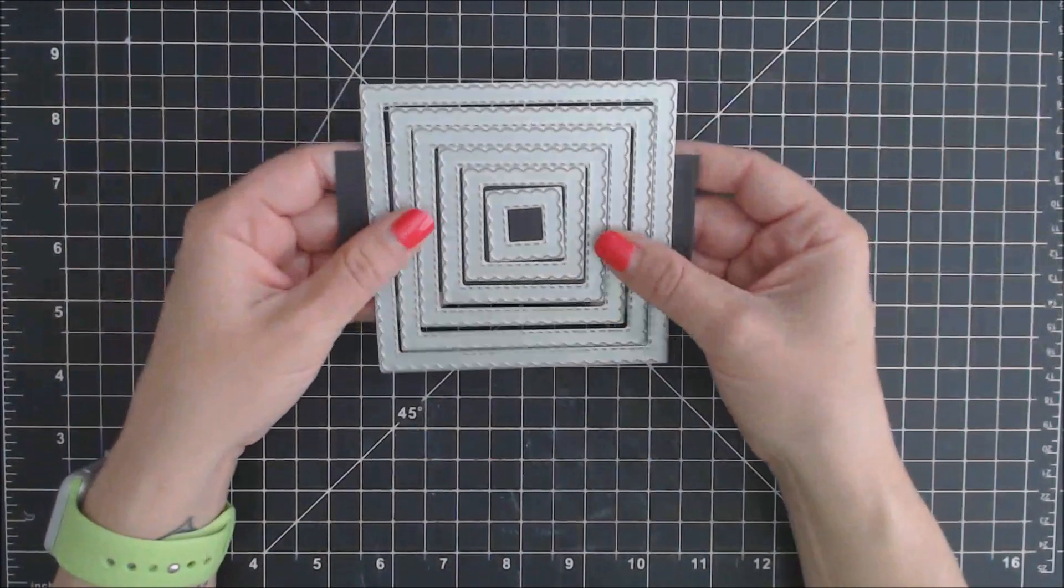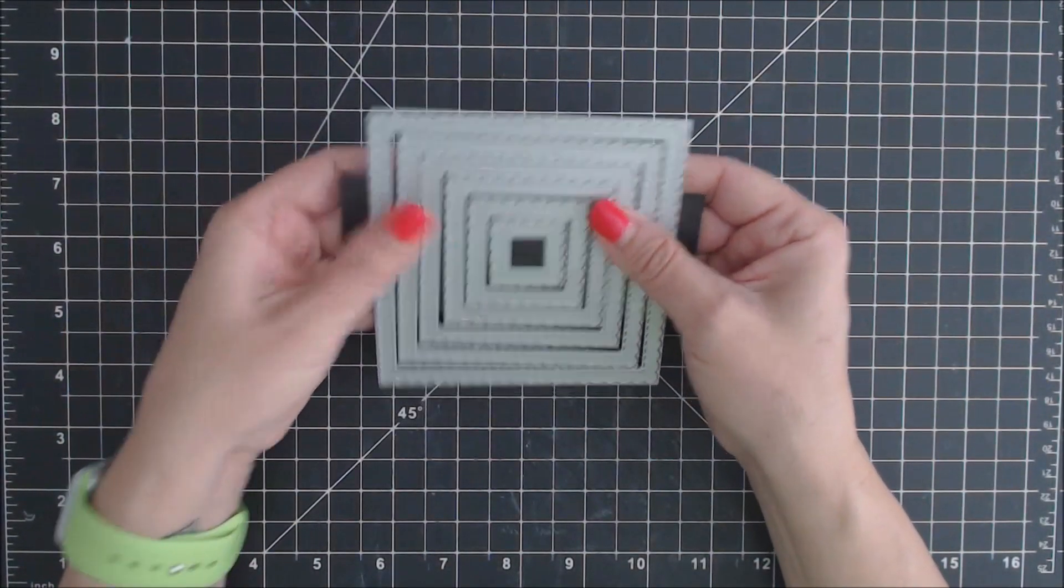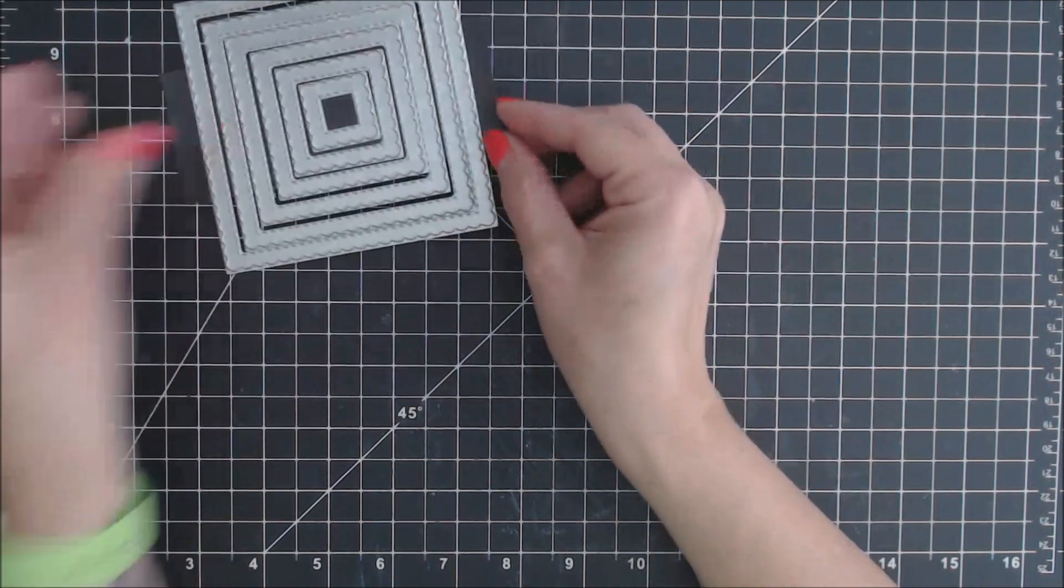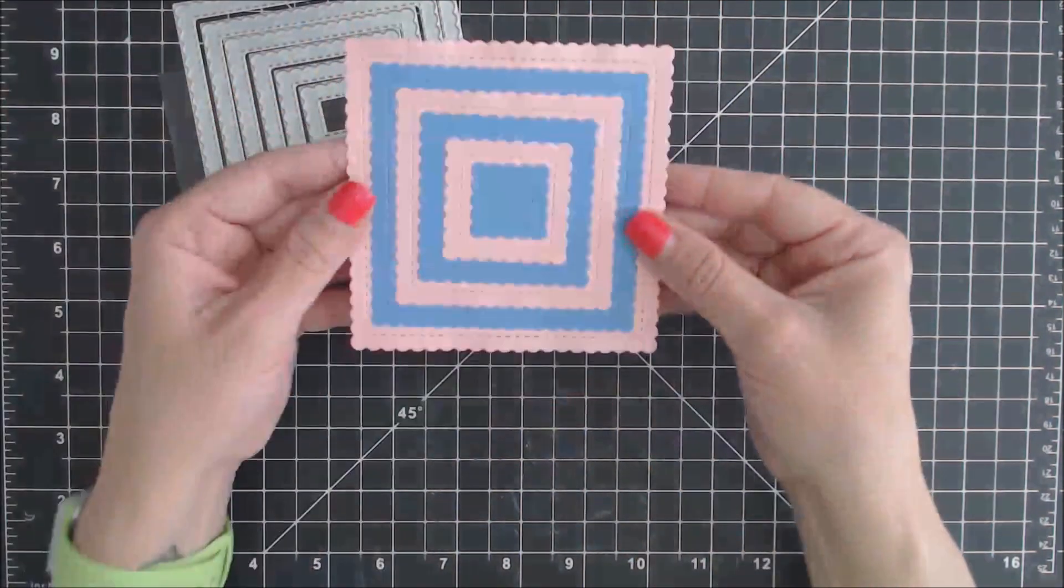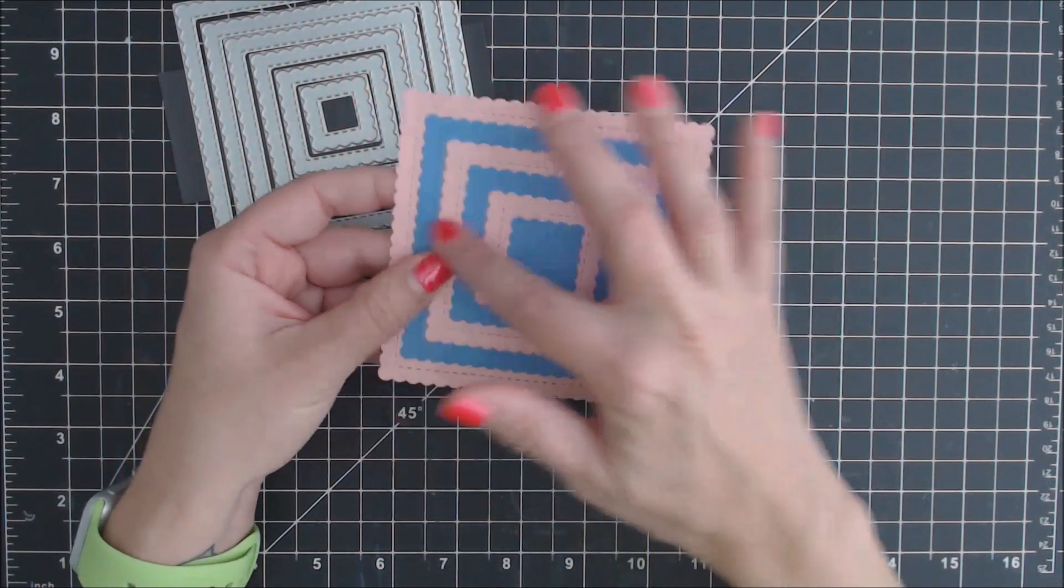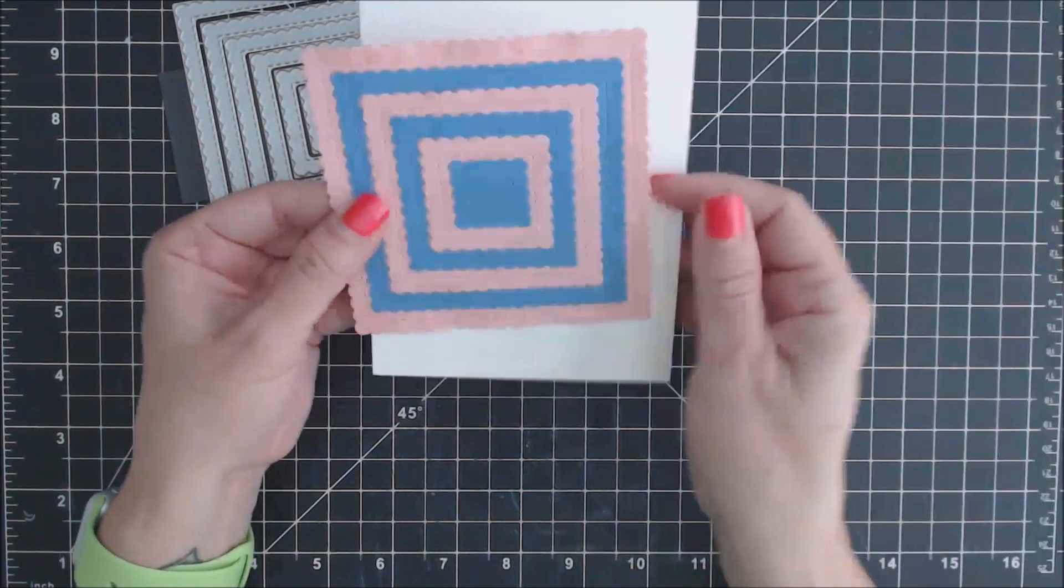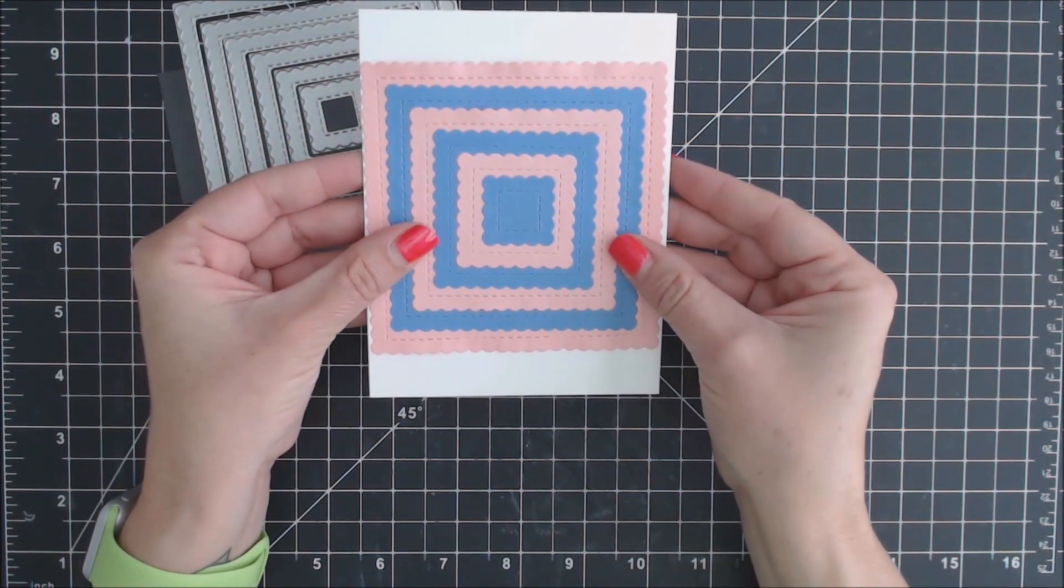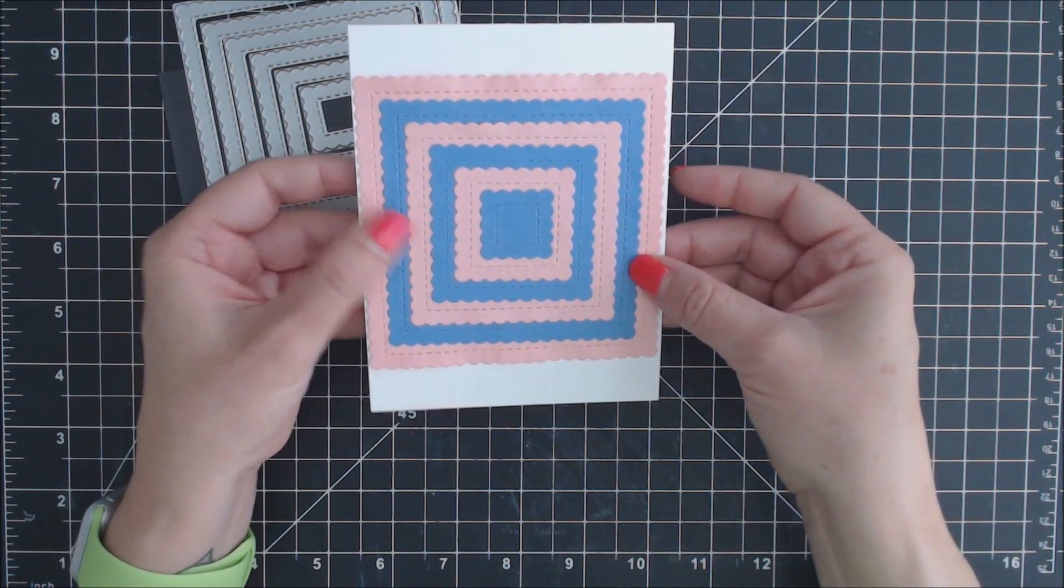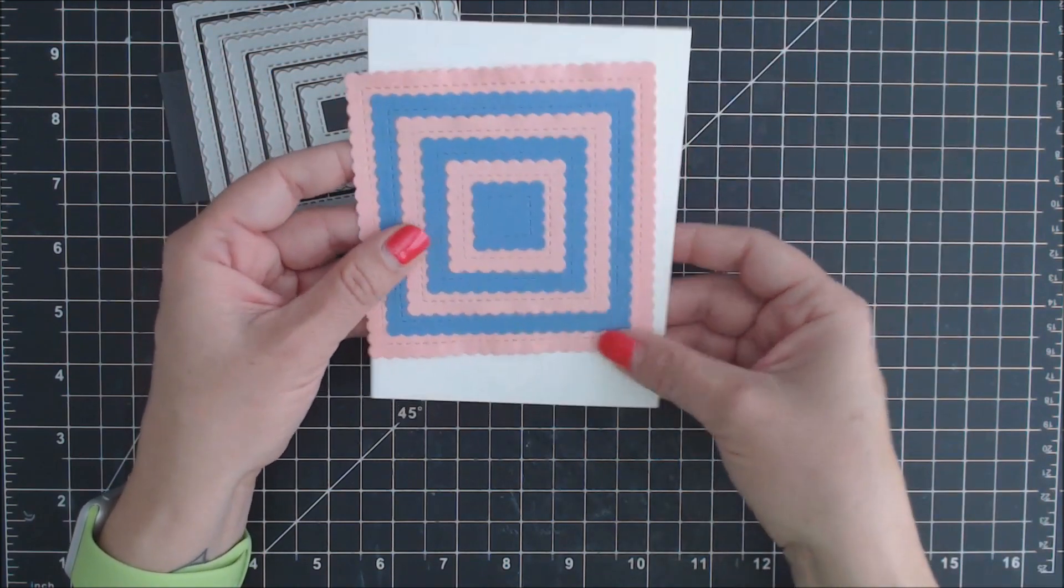Now we have the stitched scallop squares. This one contains six different dies. Here they are. The sizes are one inch to four and an eighth of an inch. Here's how it looks on your standard size card base, got a little bit of a border on each side and then a larger border on the top.